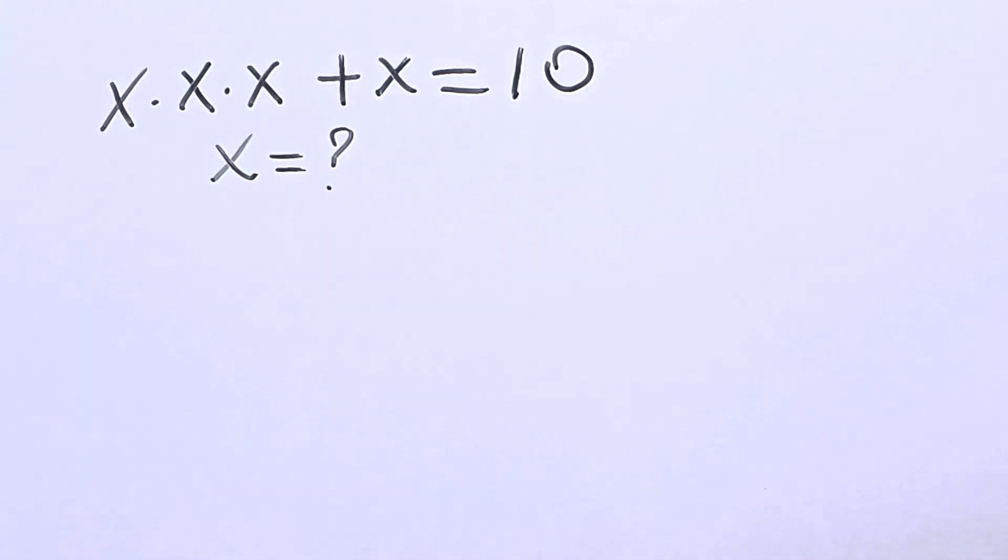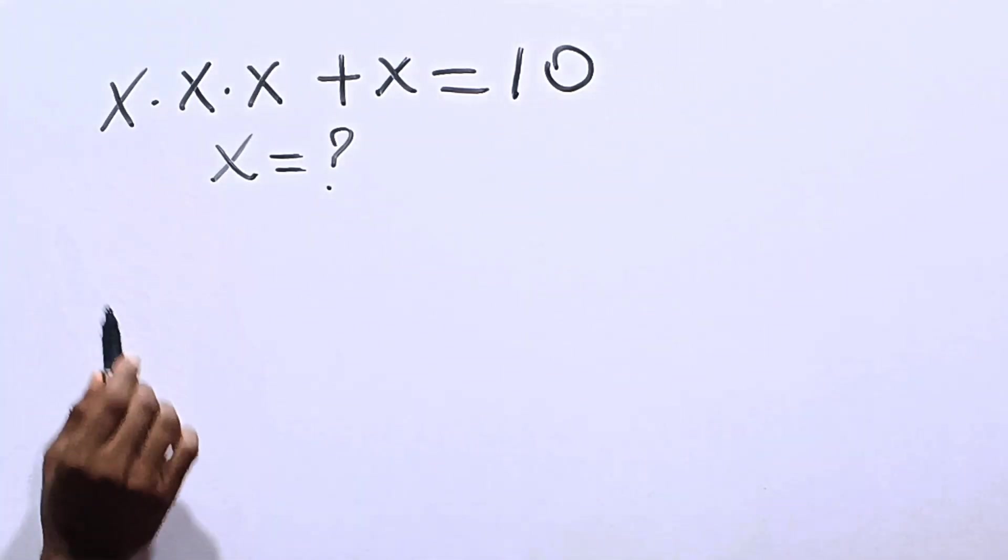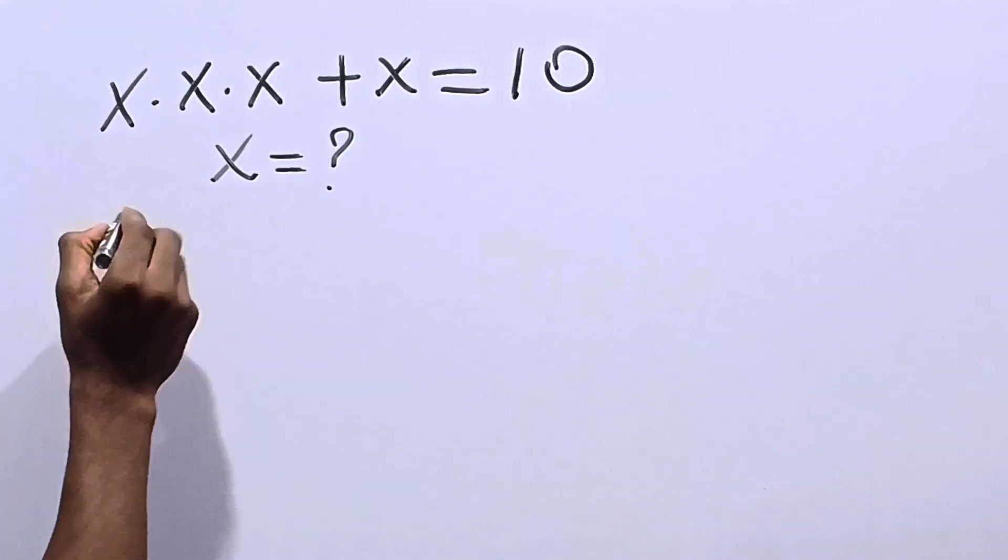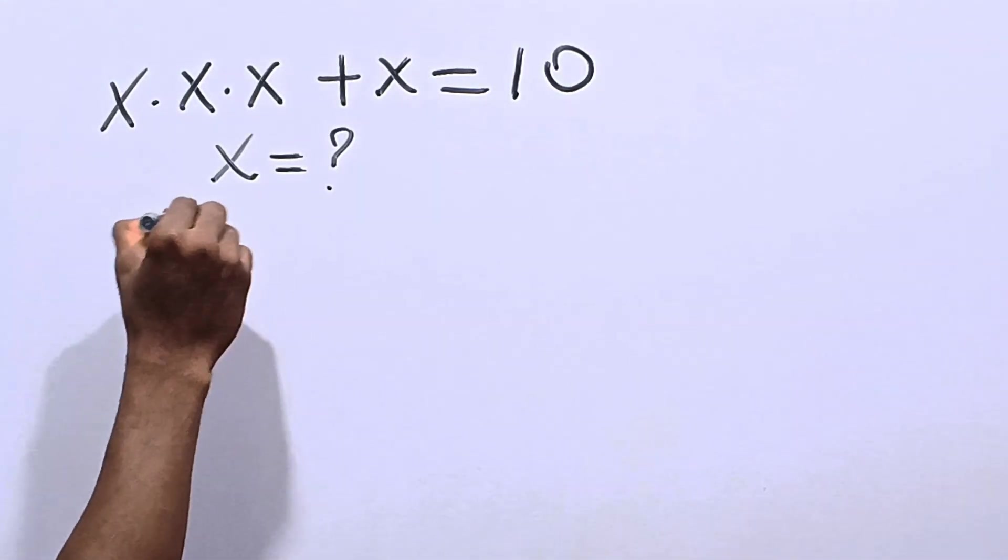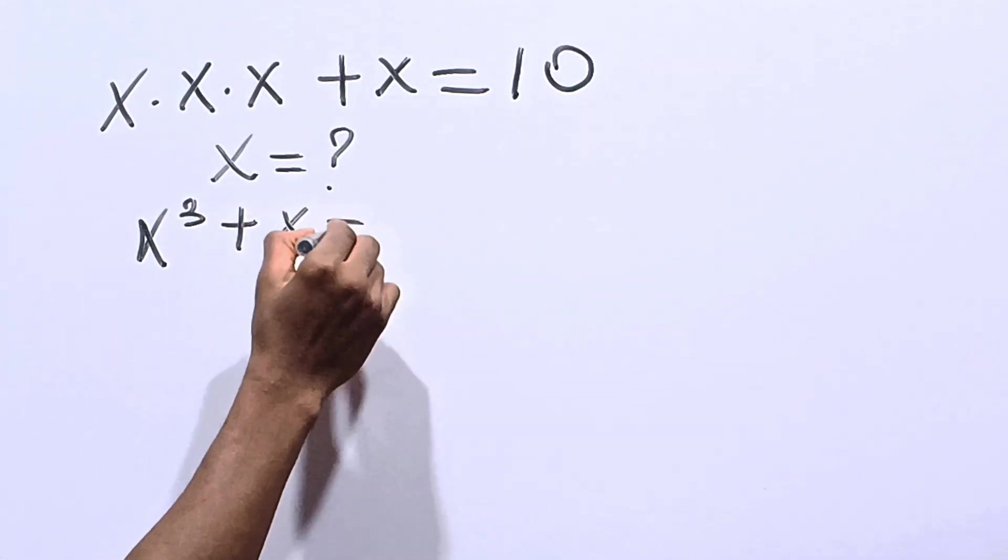Now, firstly, just looking at this question, you have dots. Dots here simply mean multiplications. So you actually have x cubed plus x is equal to 10.